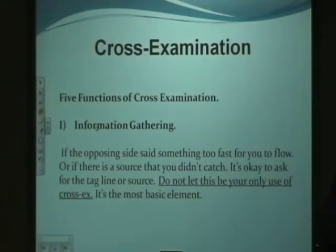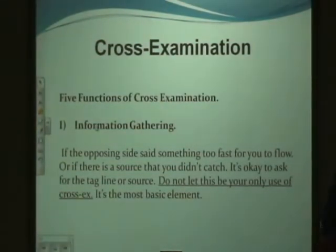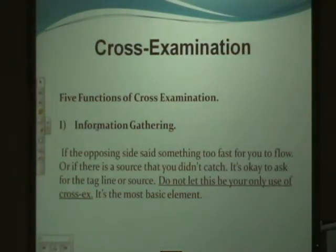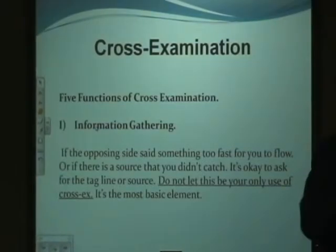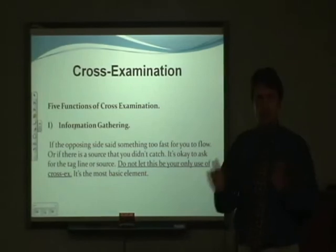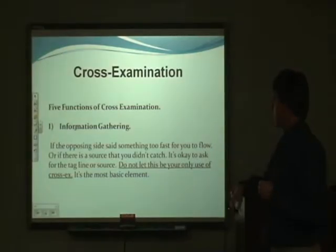The first function is simple information gathering. This is where you didn't catch a point that your opponent made — maybe she went a little too fast and you didn't get sub-point D little two. So you just ask: 'I didn't quite get the little two point under sub-point D, could you repeat that?' The speaker says it and you scribble it on your flow. You want to keep a good flow where you're writing down arguments and responses in real time as they're speaking.